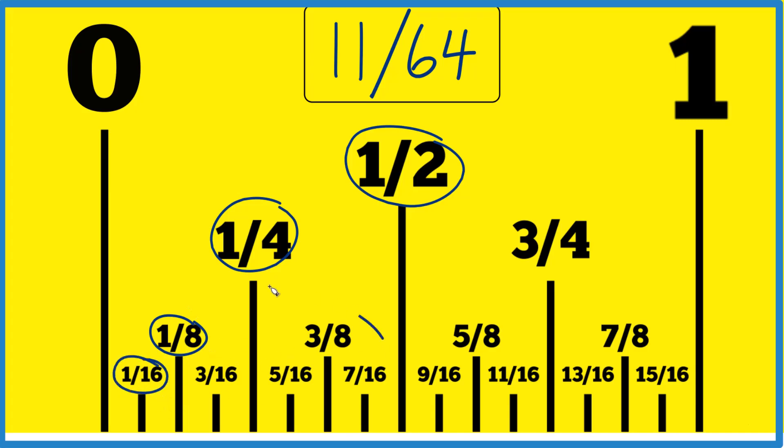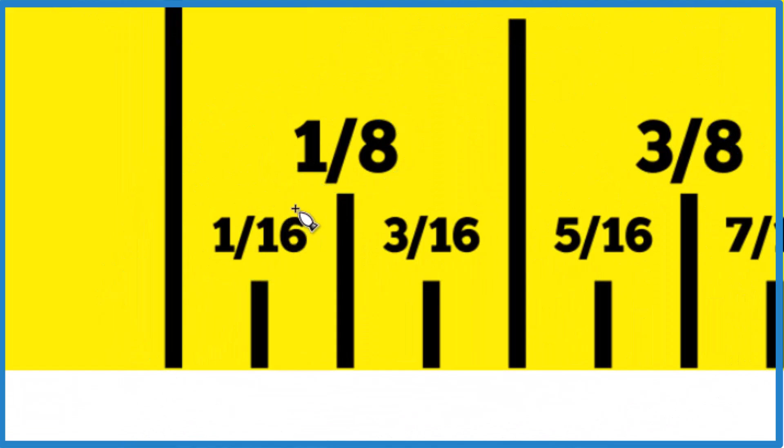So let's zoom in on this area right down here. If we take our one sixteenth of an inch and cut that in half, that'll give us 1/32nd of an inch. Then if we cut this 1/32nd of an inch in half like this, we get 1/64th of an inch.